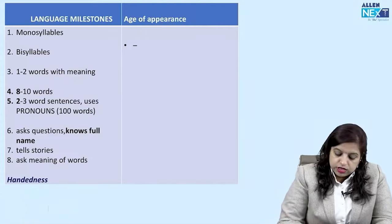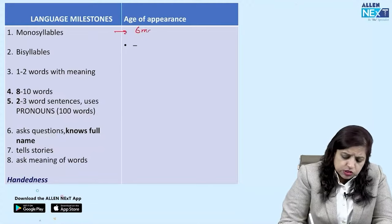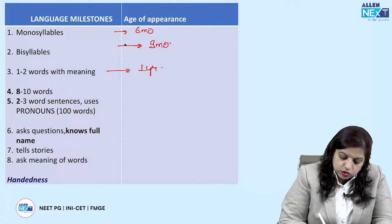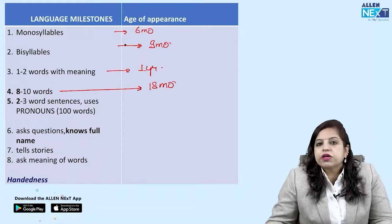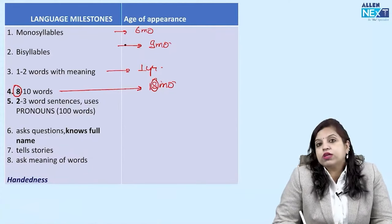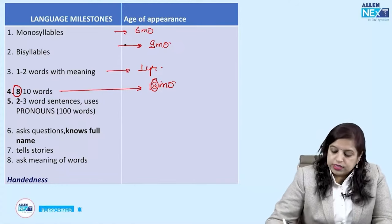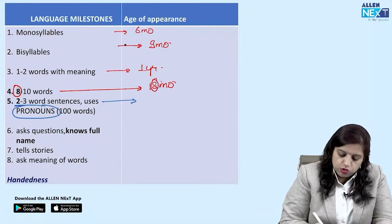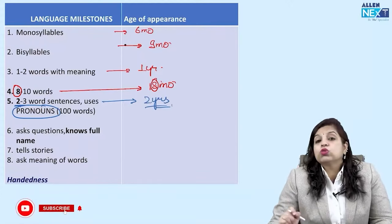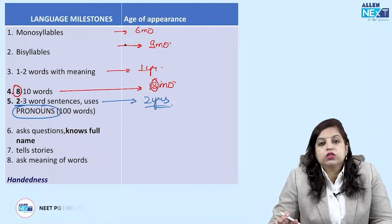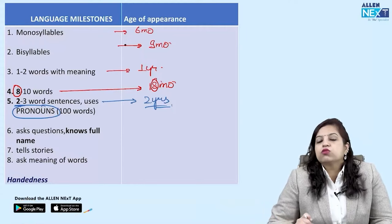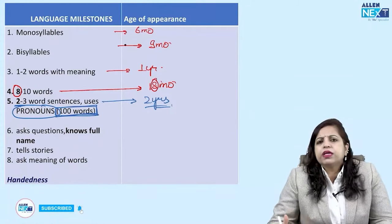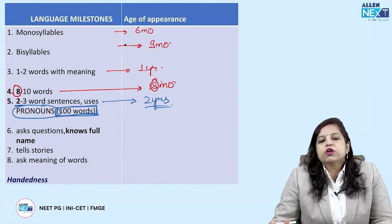Language milestones: monosyllables come at around 6 months, bisyllables at around 9 months, one to two words with meaning at one year, and 8 to 10 words at 18 months — remember '18' has an 8 in it. Two to three word sentences and usage of pronouns comes around two years of age — note these are sentences of two to three words, not just individual words.